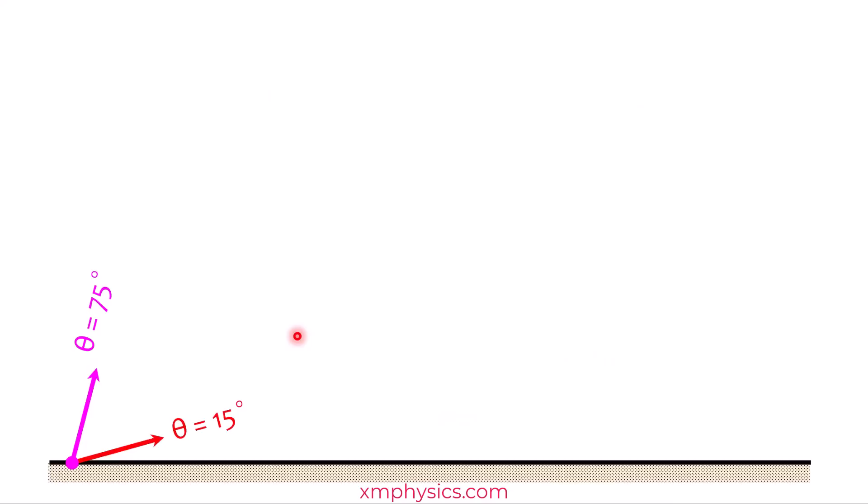Okay, now let me show you two projectiles launched at the same speed, but one is launched at 15 degrees above the horizontal. The other one is launched at 75 degrees. So let's look at the two projectiles. They land at the exact same point. So they have the same exact horizontal range. How is that possible?